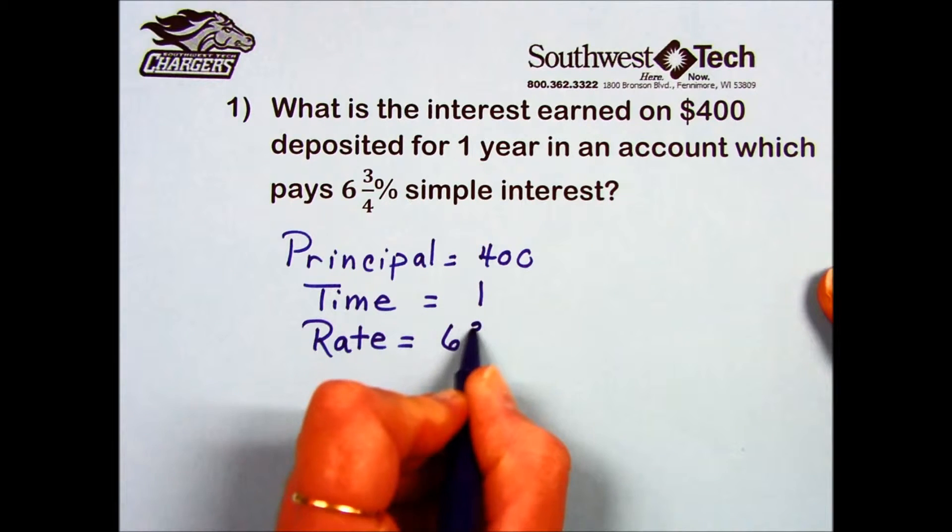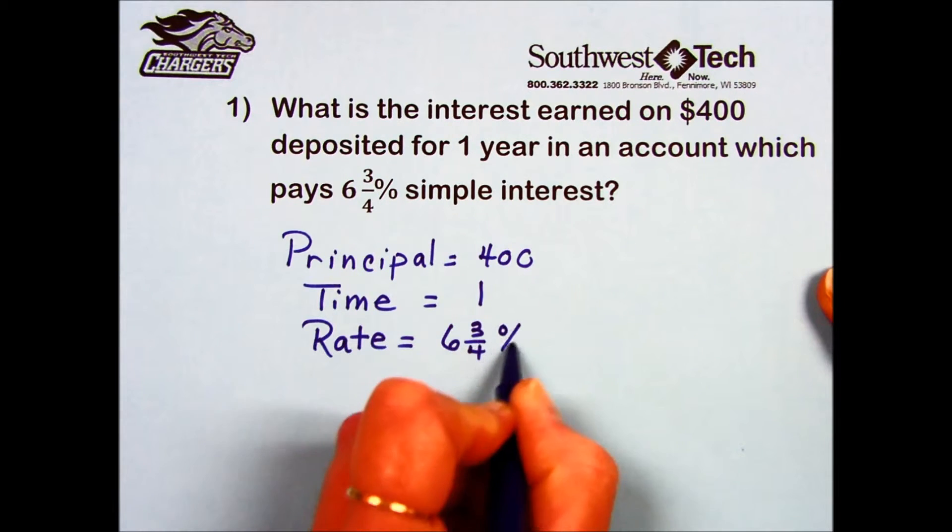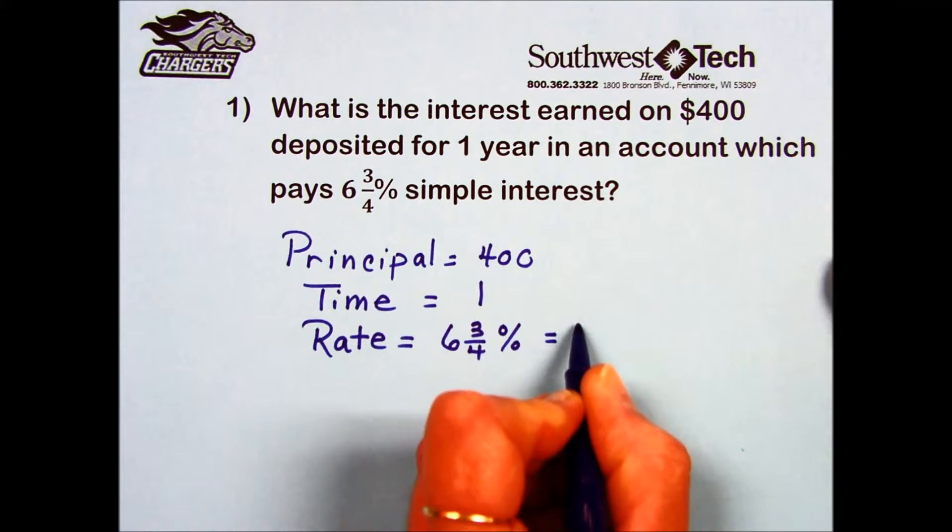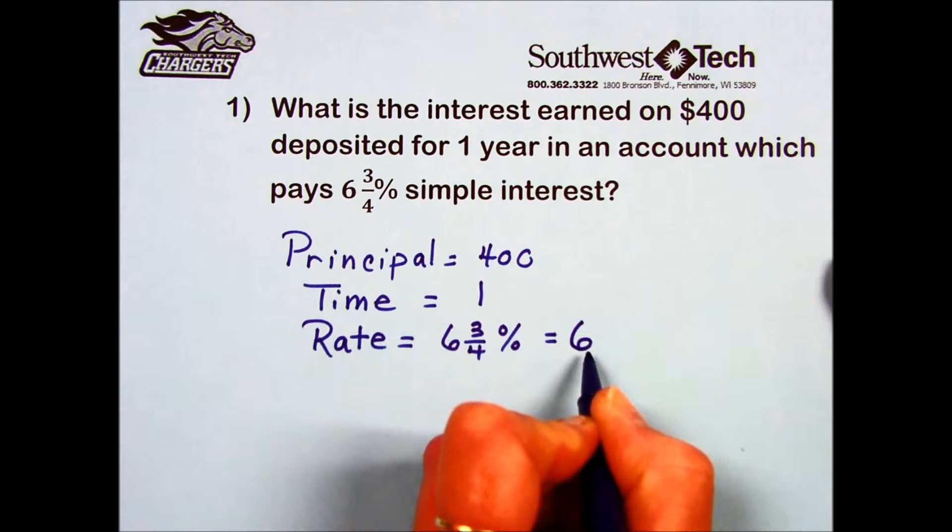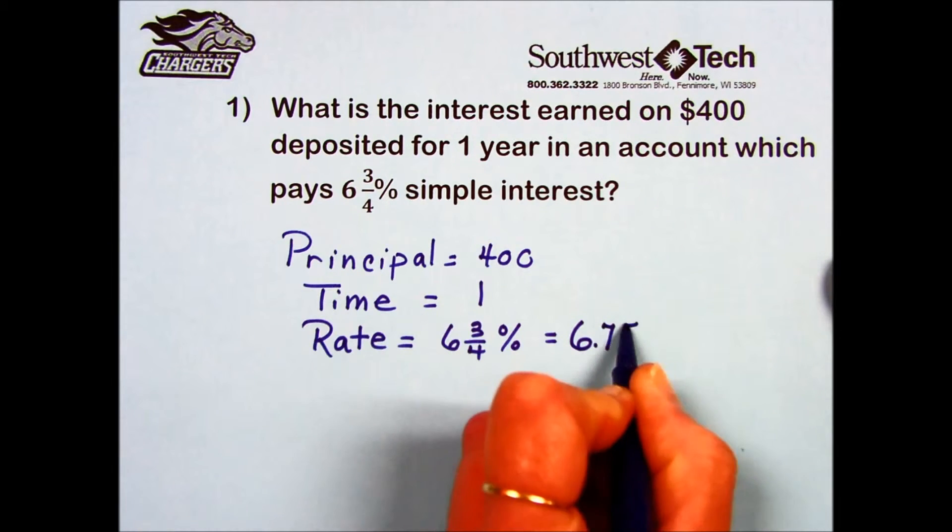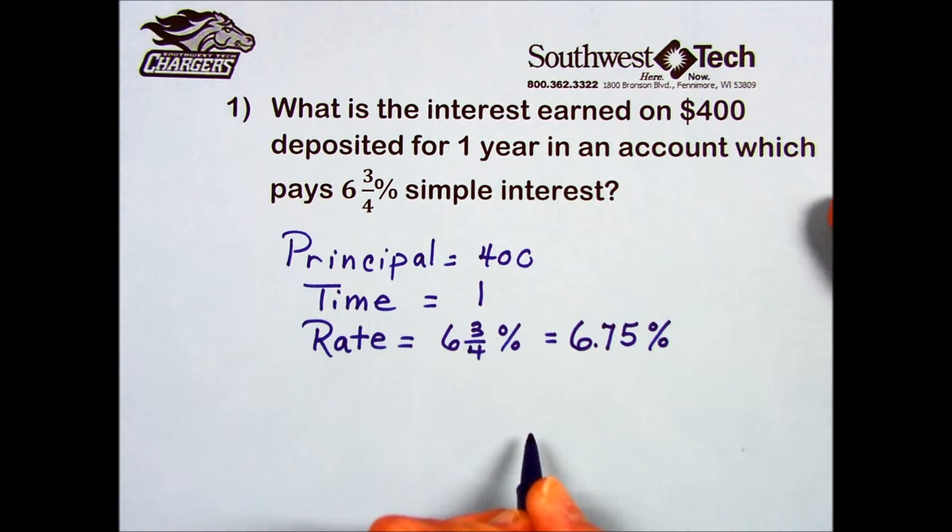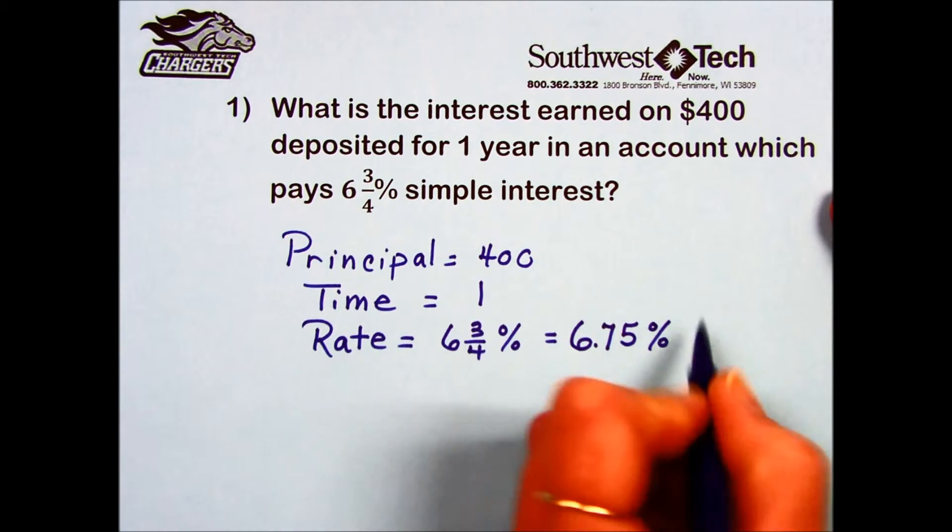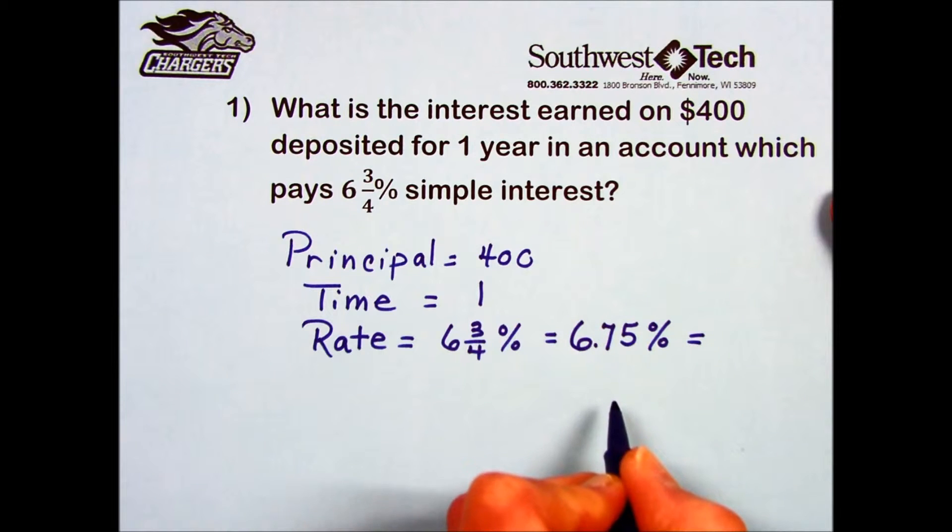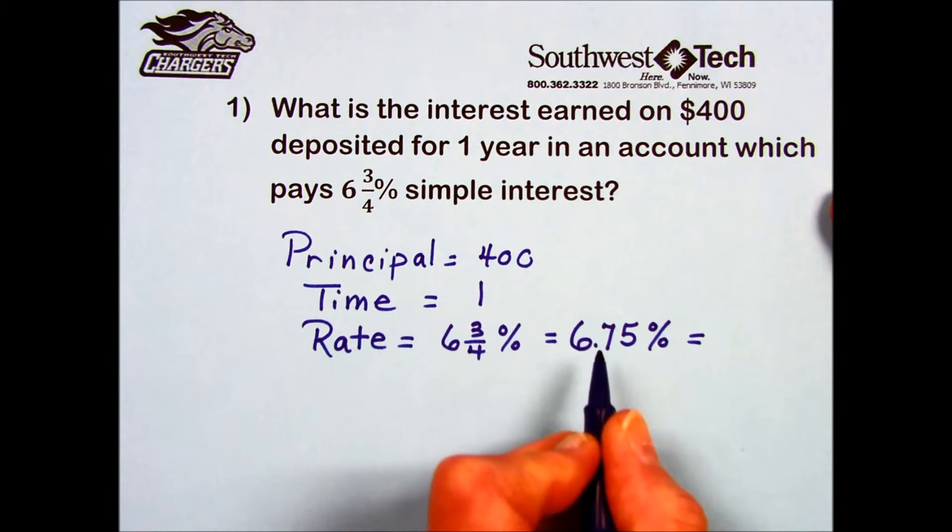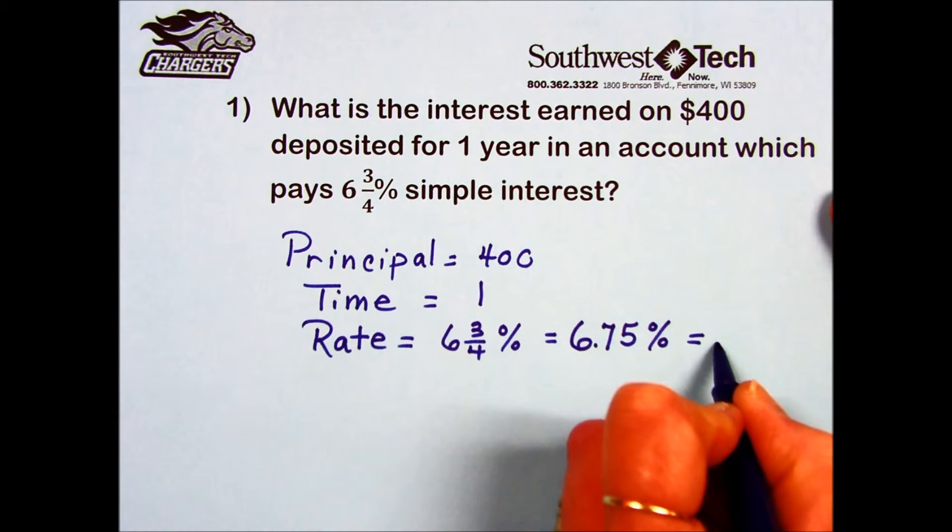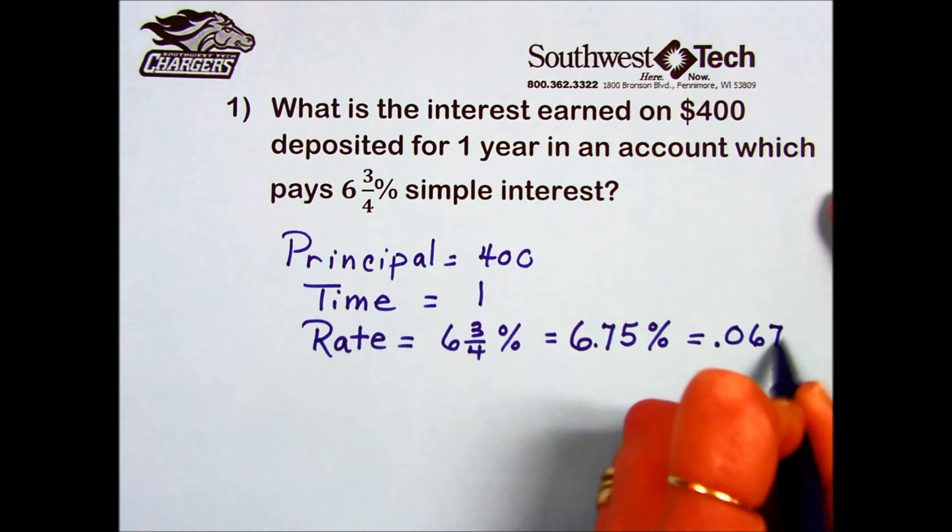Rate needs to be expressed as a decimal. First, I'll convert the three-fourths to its decimal equivalent of 0.75, giving us 6.75 percent. Then, converting the percent into a decimal by moving the decimal point two places to the left, we have 0.0675.